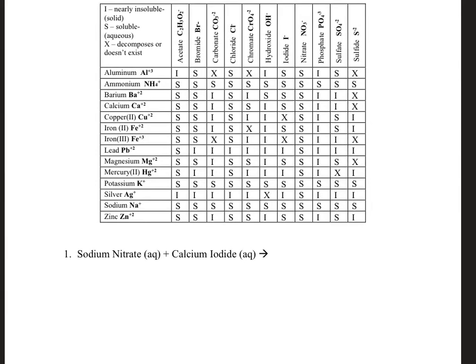Hello science fam, double replacement worksheet number two is in full effect. Let's take a look here. It's going to be a double replacement because we have two compounds — sodium nitrate and calcium iodide — both aqueous coming together. So if we mix them together, there is a chance that calcium and sodium are going to swap places.